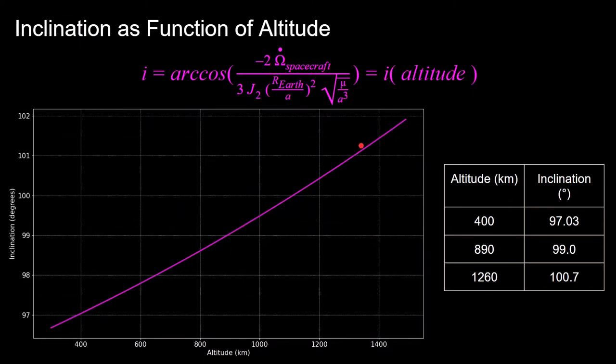Plugging in a range of values for altitudes gives us this plot here, which is the same as the one shown in the JPL paper for inclination as a function of altitude. And this little table on the right here shows a few values where I'll be plugging in the 890 and 1260 kilometer orbits to the ground tracks since they are repeated on a daily basis on their ground tracks.